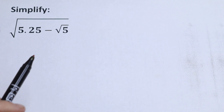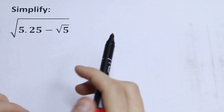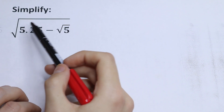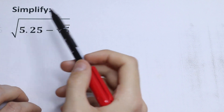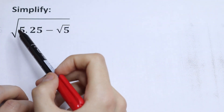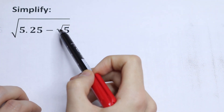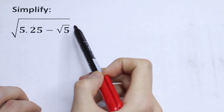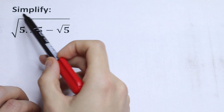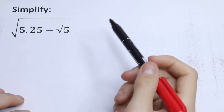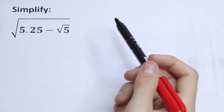Hello everyone, welcome back to MathMode. Here we have an interesting algebra problem. We need to simplify this square root. We have 5.25 minus square root of 5, and we need to find the square root of all of these. How can you do this?